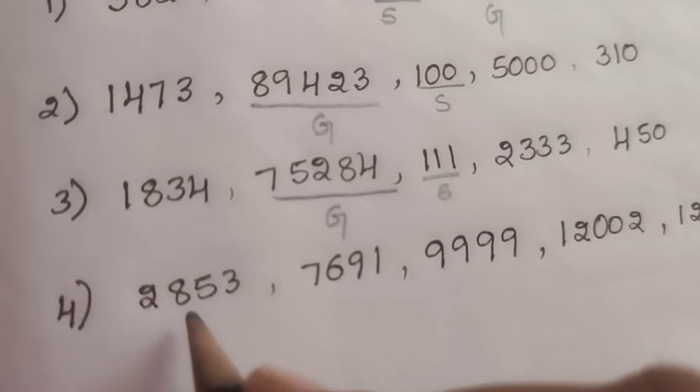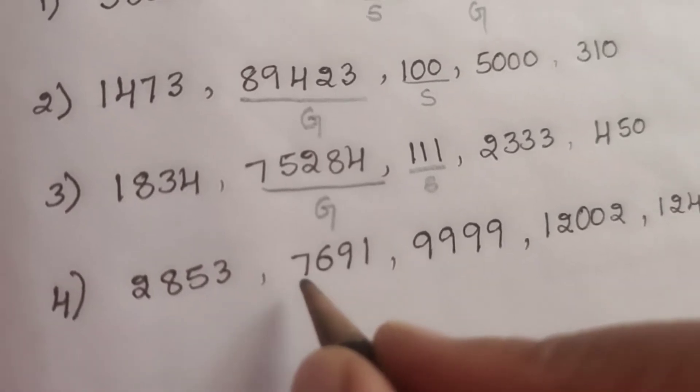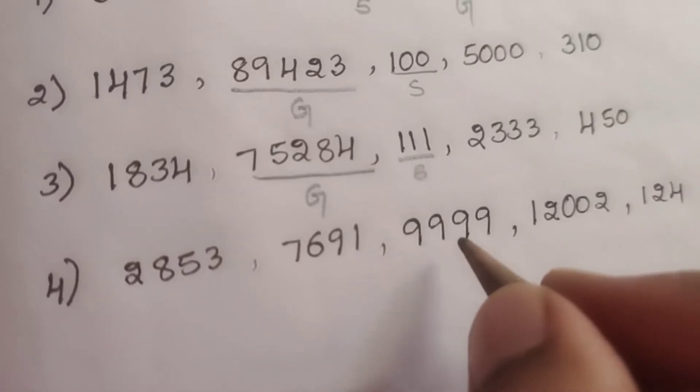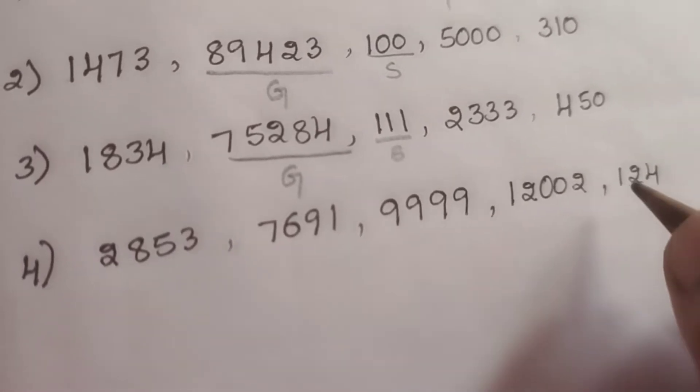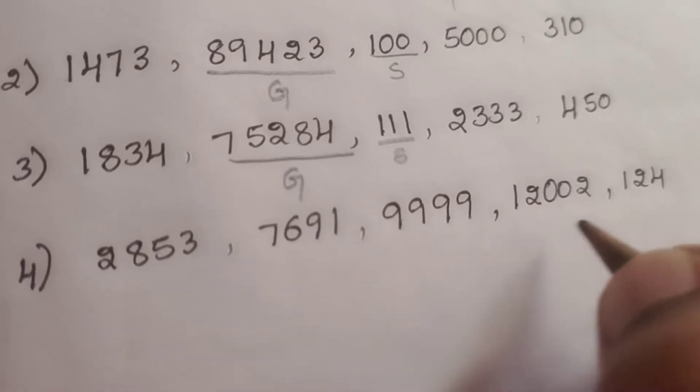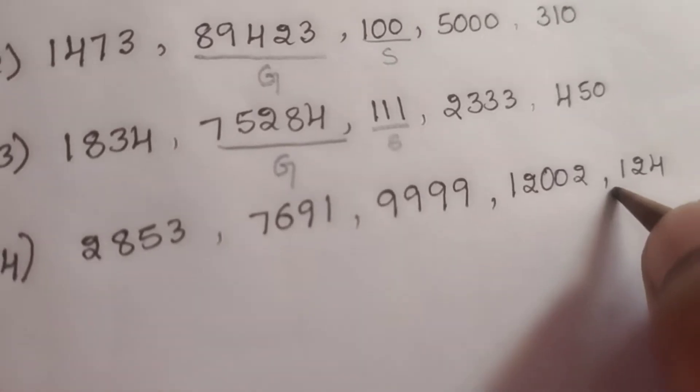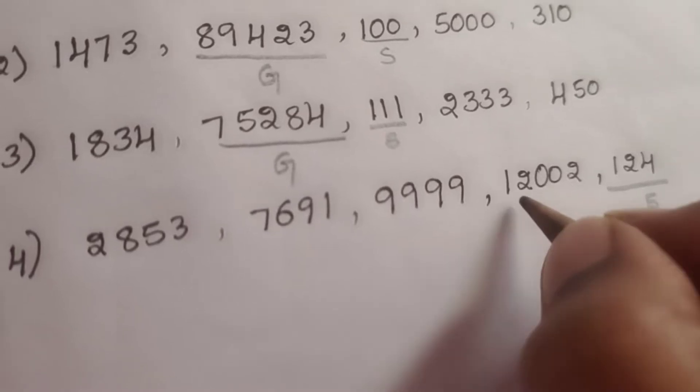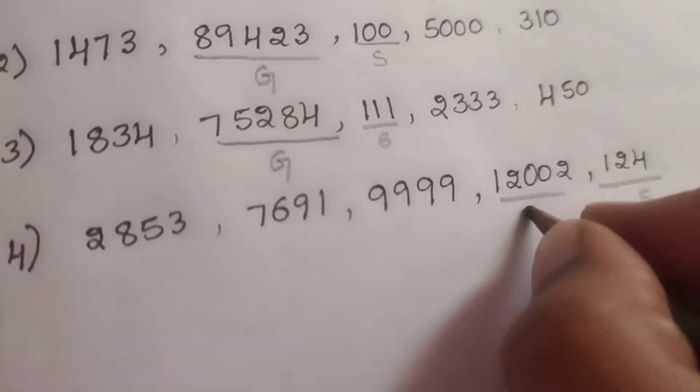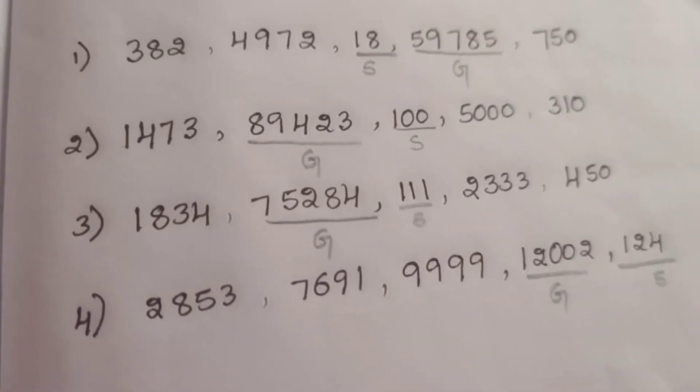Fourth one: 2853, 7691, 9999, 12,002 and 124. Which is the smallest here? 124 is the smallest and 12,002 is the greatest number.